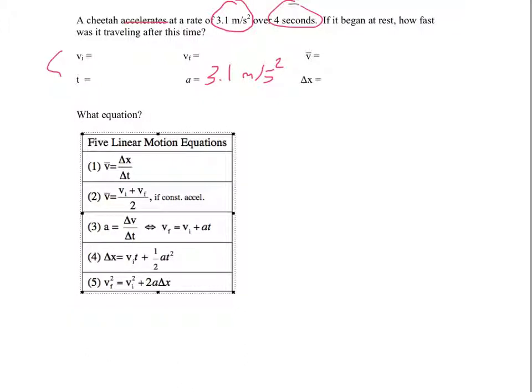All right, over four seconds. So seconds are a unit of time, so four seconds. It began at rest, so that's a starting speed. Rest means it's not moving, so vi is zero.